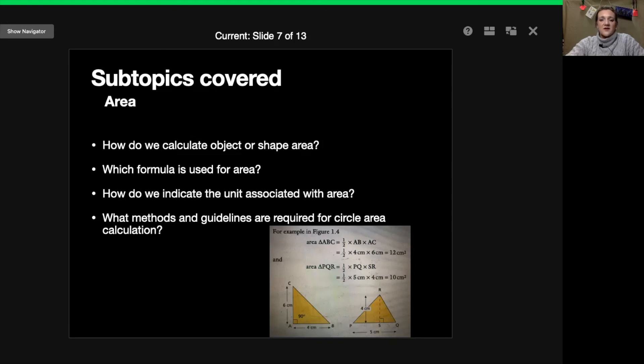What methods and guidelines are required for circle area calculation? As I said you have to find the very middle of your circle. Then find the radius which is half of the circle to any side of the circle. Measure that and then you multiply it by pi. So you use pi to calculate with radius which is the half of your circle to any side.